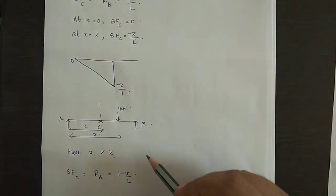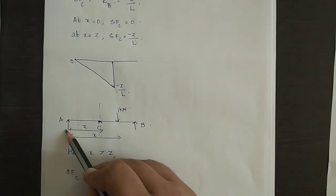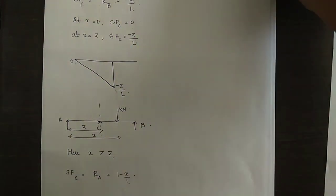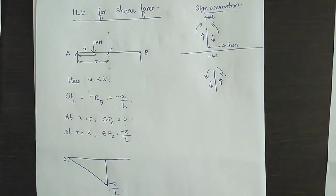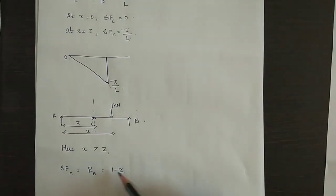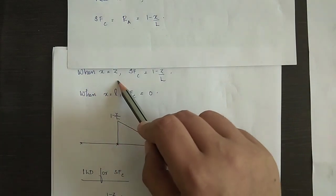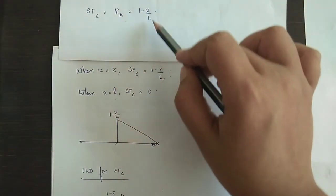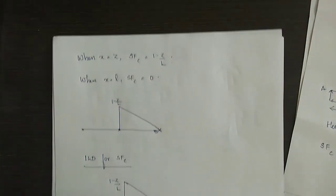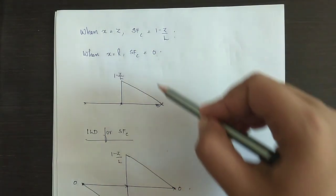When the 1 kN load is placed to the right of the section, X is greater than Z. Shear force is written as positive RA, since upward forces to the left of the section are positive. RA equals 1 minus X by L, so at X equal to Z shear force is 1 minus Z by L, and at X equal to L shear force is 0.